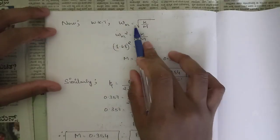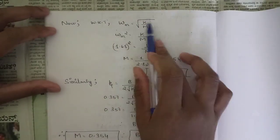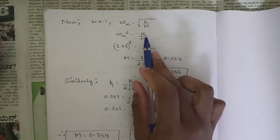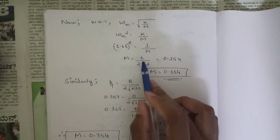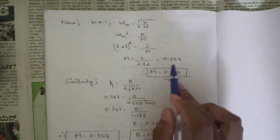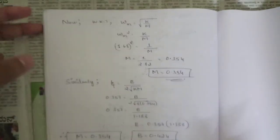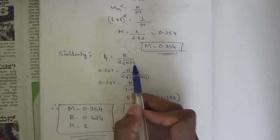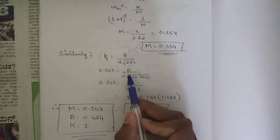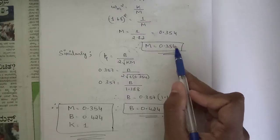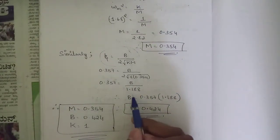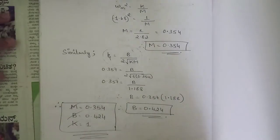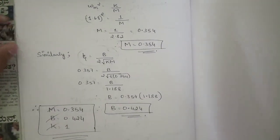Using ωn = √(k/m): ωn² = k/m → 1.68² = 1/m → m = 1/2.82 ≈ 0.354. For b, using ζ = b/(2√(km)): 0.357 = b/(2·√(1·0.354)), so b ≈ 0.424. We have now found all three values: k = 1, m = 0.354, and b = 0.424.